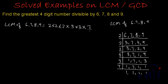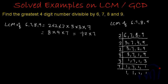And then it will get divided by 7: 7 ones are 7. So LCM of 6, 7, 8 and 9 will be 2 to the power 3, multiplied by 3 squared, multiplied by 7. That is 8 multiplied by 9 multiplied by 7, which equals 72 multiplied by 7. And finally 7 twos are 14, carry 1, 7 sevens are 49 plus 1 is 50. So the LCM is equal to 504.